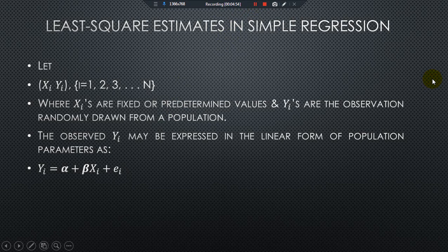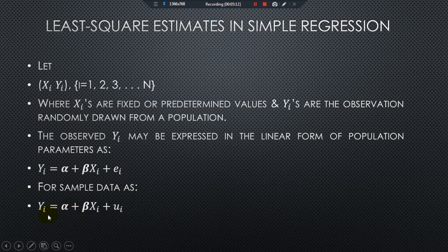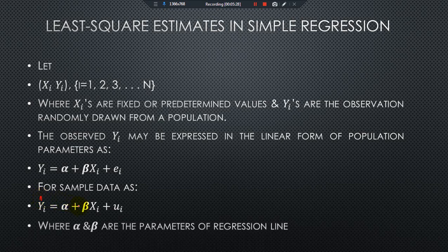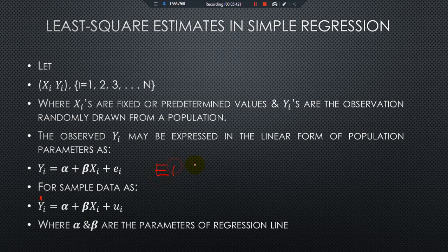Here e_i is our error term, which is normally a white noise error term — this will be discussed in a coming session covering properties and assumptions of the error term. For the sample case, we have a regression line y_i = α + β·x_i + u_i. When talking about the sample case, we have an estimated regression line written as ŷ (y-hat). In both cases, α and β are the parameters of the regression line.